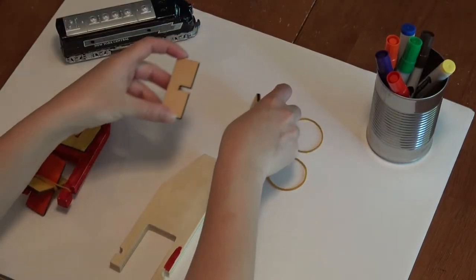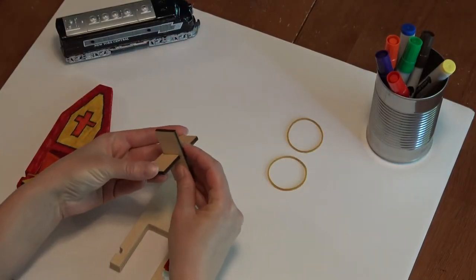Alright, now that you're done decorating your boat, we're going to put the paddle together. First thing you're going to do is you're going to take your two pieces and you're going to slide them together like that to make the paddle.